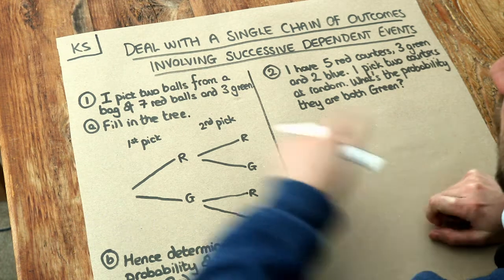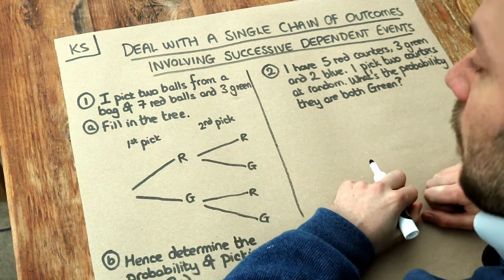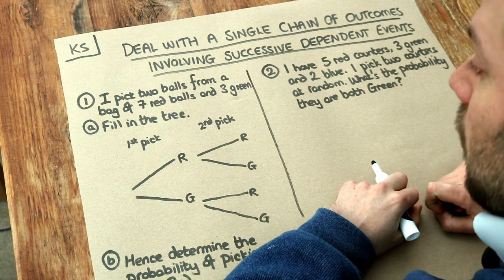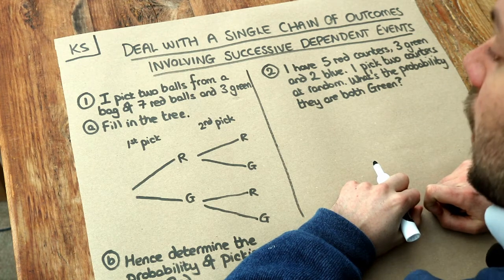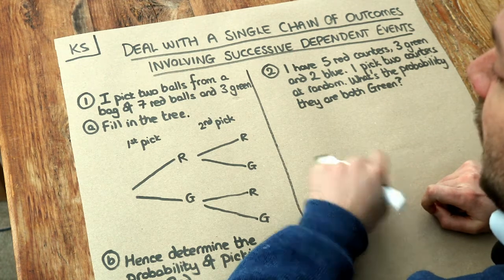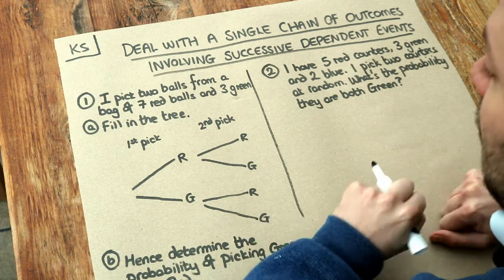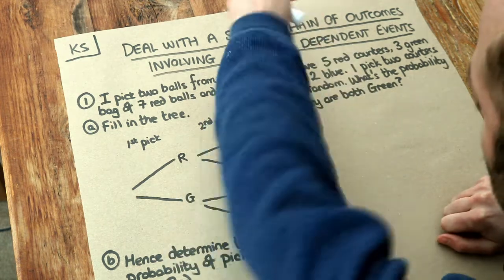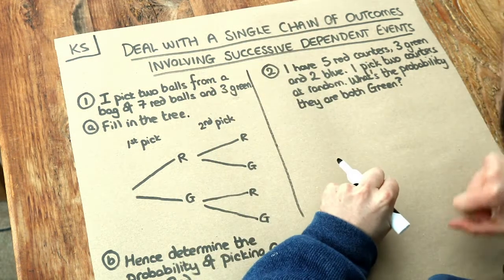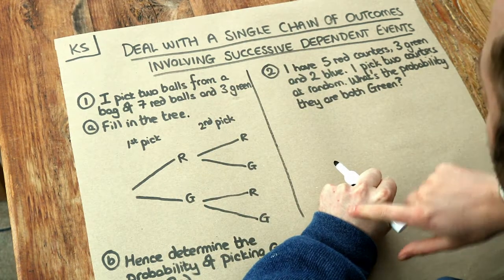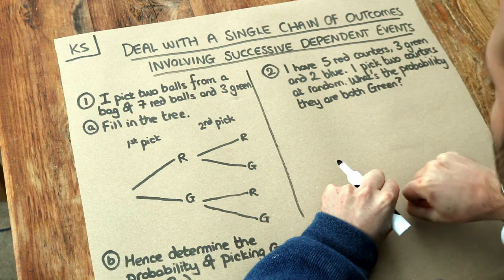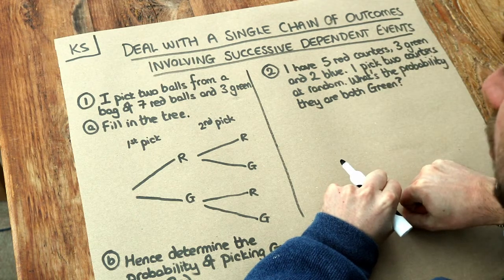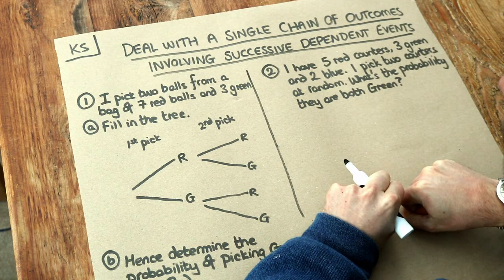Now let's look at this question. I pick two balls from a bag of seven red balls and three green. Note the implication: if you pick two balls, you're picking one ball and then not putting that first ball back, and then picking a second ball, so you end up with two balls in your hand.